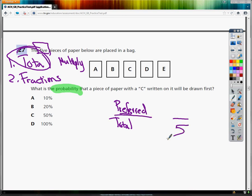So my total is five. Now my preferred is, they want to know what the probability is that a paper with a C written on it will be drawn first.